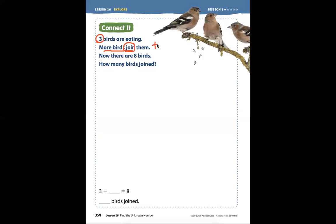Now there are eight birds. How many birds joined? So there are three birds, one, two, three, and more come.